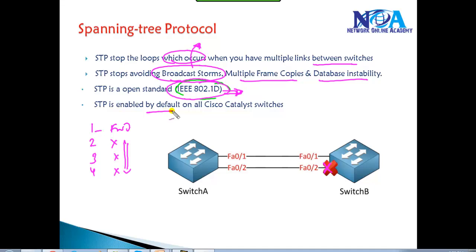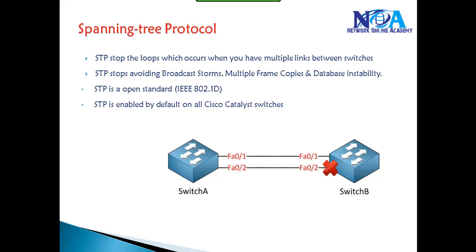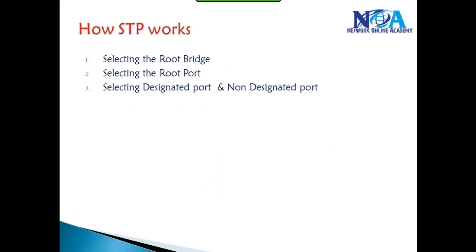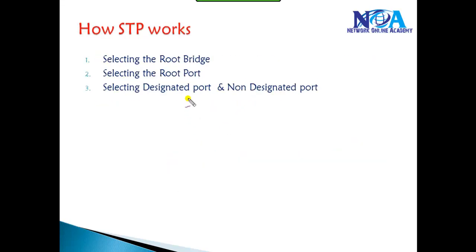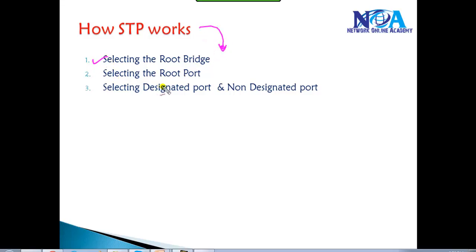STP is enabled by default in all Cisco Catalyst switches. The entire STP process happens in three different steps: first, selecting the root bridge; second, selecting the root port; and third, selecting the designated ports, which are the forwarding ports, and then selecting the blocking ports, which are the non-designated ports.